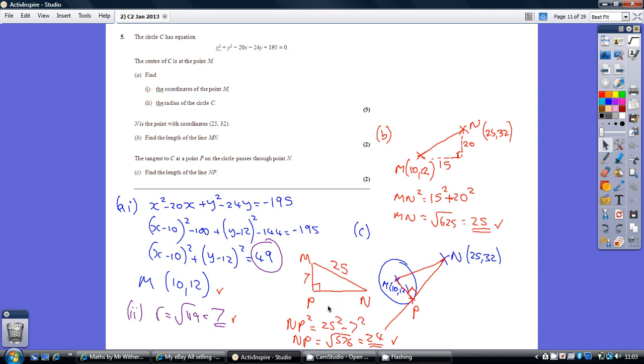We're now working out a shorter side, so it's a taking away Pythagoras, so NP is 24.